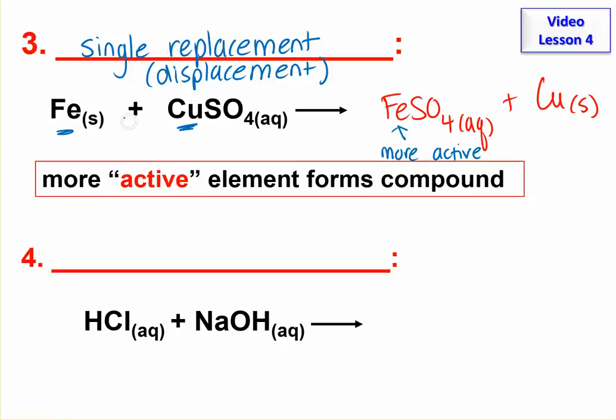You might have noticed up here we have an element and an ionic compound. On these, there's no element by itself. We have two compounds. Usually they're both ionic, but sometimes we have an acid because when an acid is dissolved in water, it acts like it's ionic. So anyway, kind of an ionic compound, ionic compound. What happens is they switch ions.